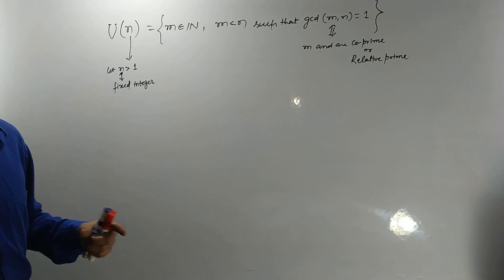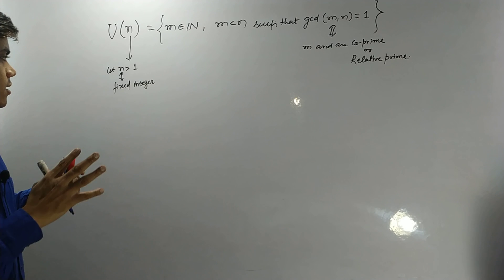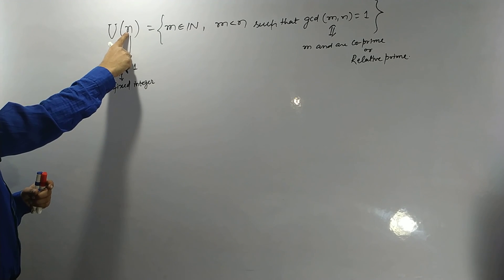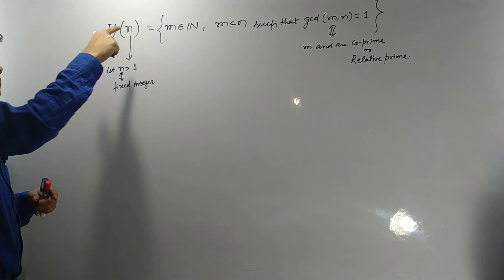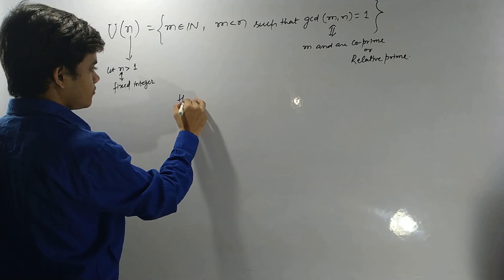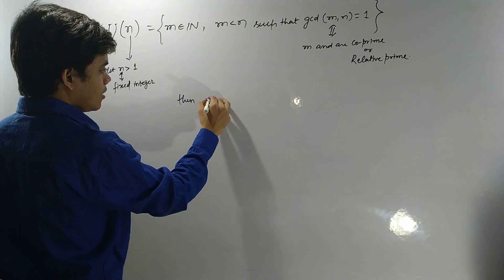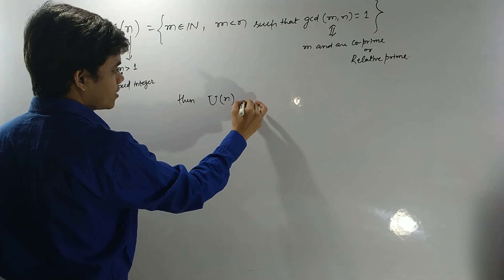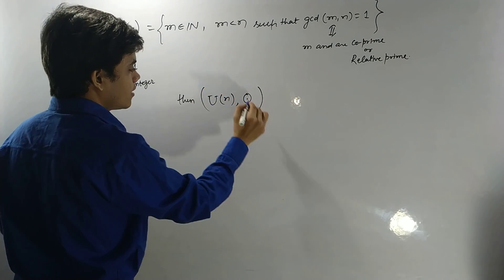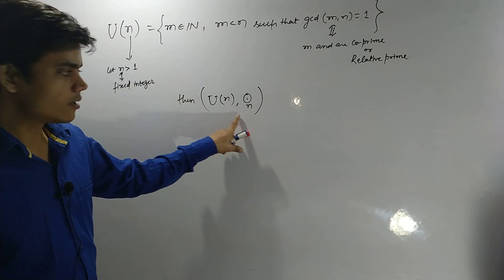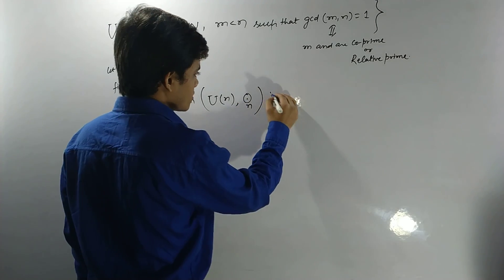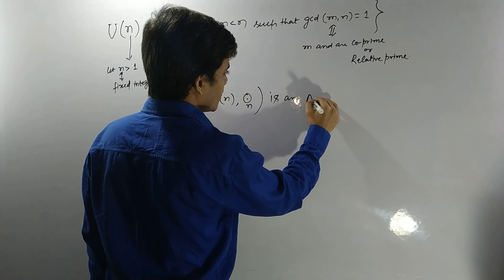So we take all the naturals which are less than this fixed integer n and which are co-prime to n. Then U(n) with multiplication modulo n is an abelian group.